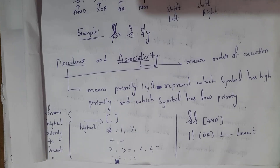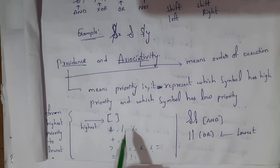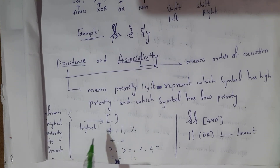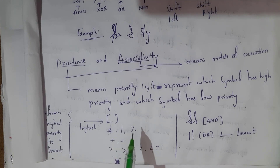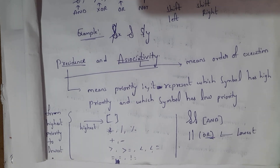There is one important topic among these operators: precedence and associativity. Precedence means priority. Brackets have the highest priority, followed by multiplication, division, and modulus, then addition and subtraction, then comparison operators, then equal to and not equal to, and last priority goes to OR.